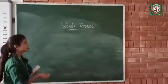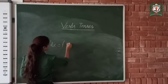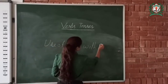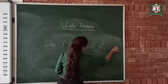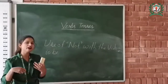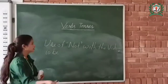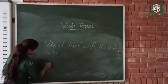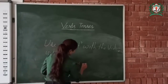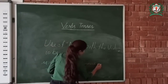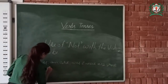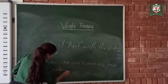Now let's see the use of not with the verb to be, or you can say the use of not with the helping verbs or auxiliary verbs. Words like is, am, are, was, and were are some of the helping verbs, or you can say auxiliary verbs.